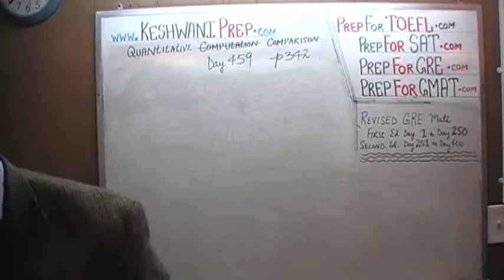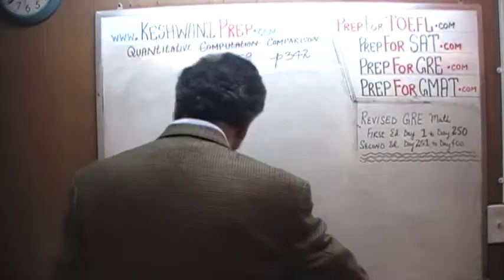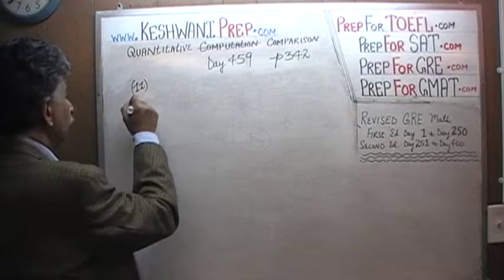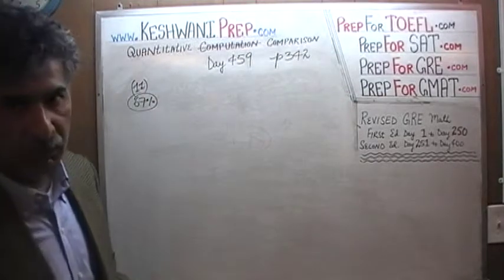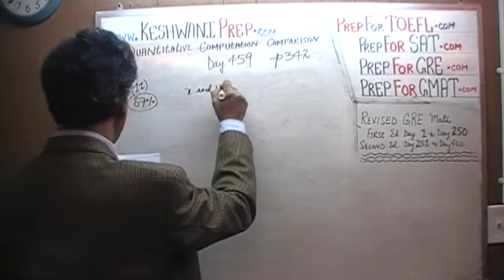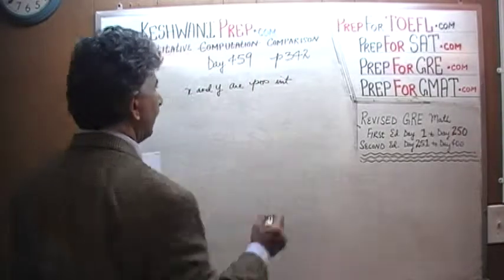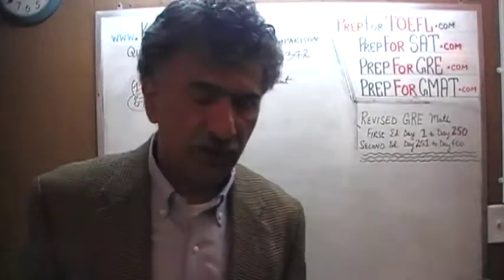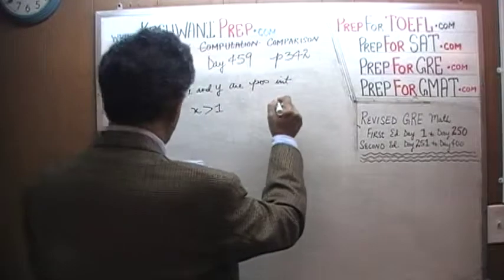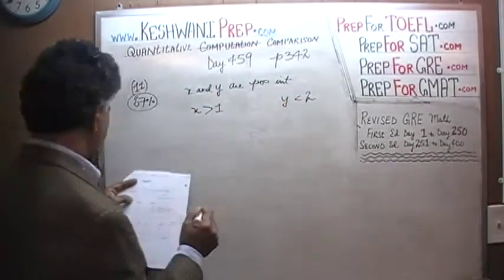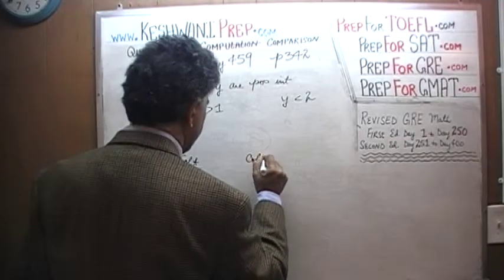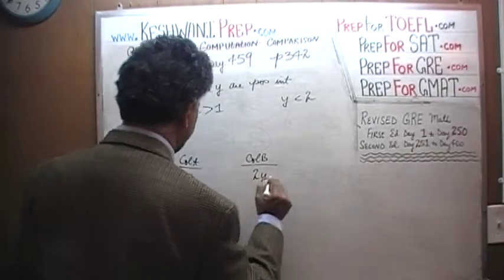Let's see what problem number 11 has to say. First, let me put down the percentile: two thirds of the people who took the exam had no trouble with this problem. Here is what we are told: x and y are positive integers — they have to be whole numbers and they have to be positive. We are also told that x is more than 1, and y is less than 2. What we are being asked to compare is column A, which has x, and column B, which has 2 times y.